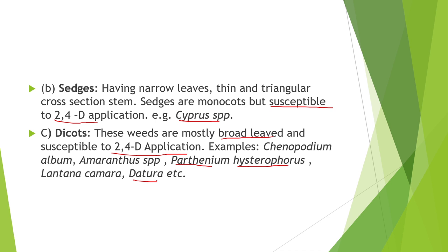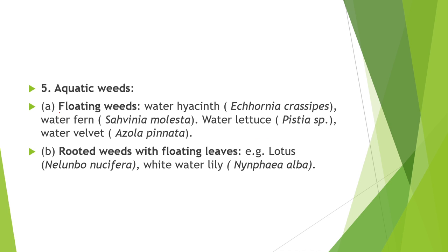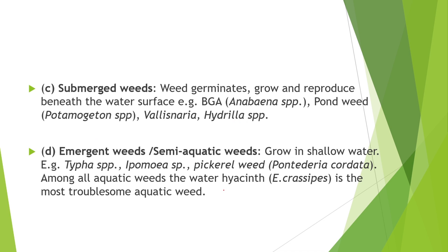Next is classification of aquatic weeds. First is floating weeds — they float on the water surface. Examples are water hyacinth, water fern, water lettuce, and water velvet. Second is rooted weeds with floating leaves — examples are lotus and white water lily. Third is submerged weeds — germinate, grow, and reproduce beneath the water surface. Examples are BGA (blue-green algae), pond weed, Vallisneria, and Hydrilla species. Fourth is emergent or semi-aquatic weeds — grow in shallow water conditions. Examples are Typha species, Ipomoea species. Among all aquatic weeds, water hyacinth (Eichhornia crassipes) is the most troublesome.